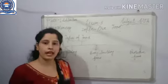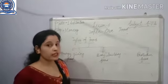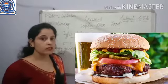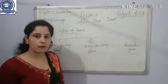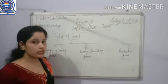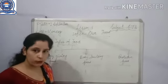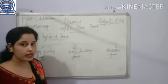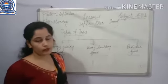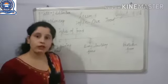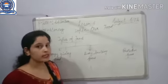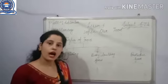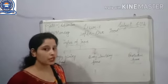Now we are talking about unhealthy food or junk food. Examples include pizza, burger, chow mein, etc. Uncovered food, junk food, and unhealthy eating habits make us sick. And when we fall sick, the doctor gives us painful injections. So students, we must avoid these types of junk food.